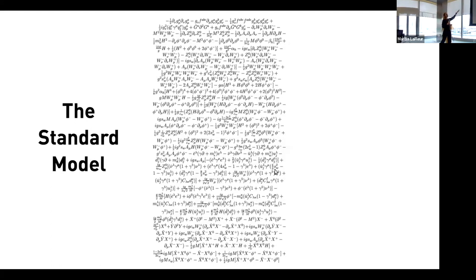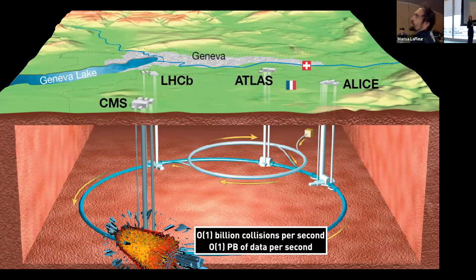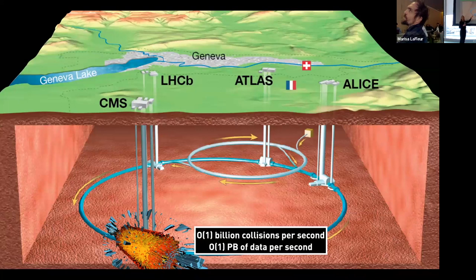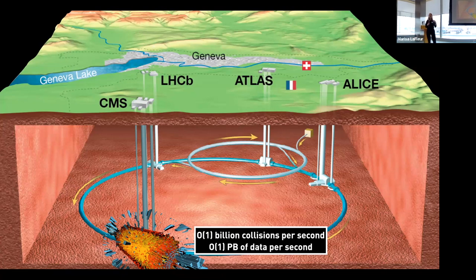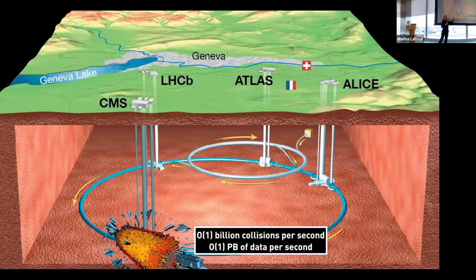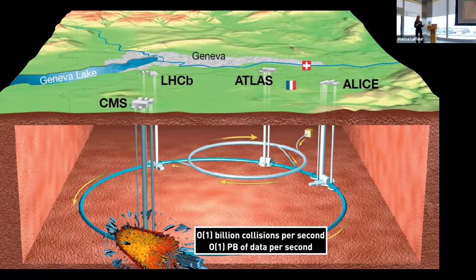We're trying to measure the parameters of the standard model very accurately. Our problem is that we produce orders of a petabyte of data every single second. Ideally we want to read out all that data, but we can't. If you have silicon detection material and you want to read out data, you need power and chips — that means dead material where particles crash and are lost. The more chips and cabling you put in there, the less things you see. Even if we could read out all that data, our detector would be opaque — just cables, no detection material.